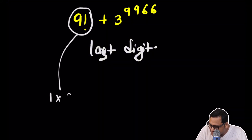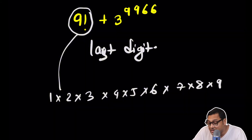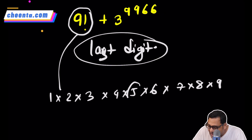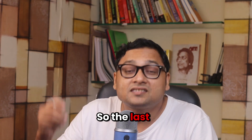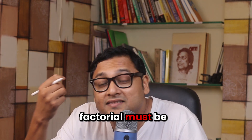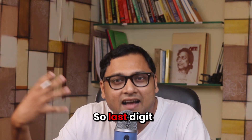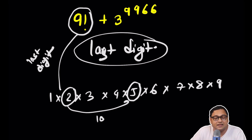Nine factorial is simply one times two times three times four times five times six times seven times eight times nine — a product of nine numbers. It seems intimidating, but we are only interested in the last digit. There is a five here and a two here, so these two multiplied give you 10. The last digit of nine factorial must be zero — it's a multiple of 10. So nine factorial is fine; the last digit is zero.